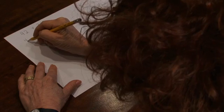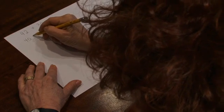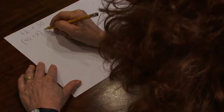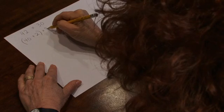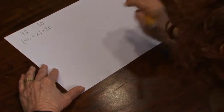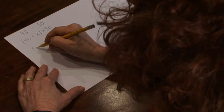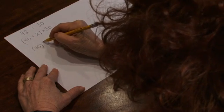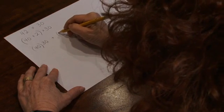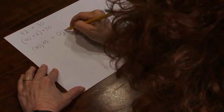42 means 40 plus 2, times 30. So first, we'll need to multiply 40 times 30, and then 2 times 30.